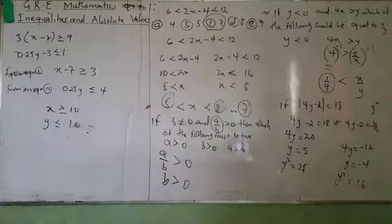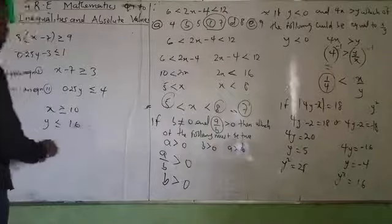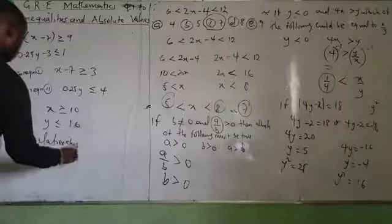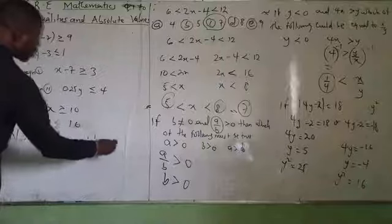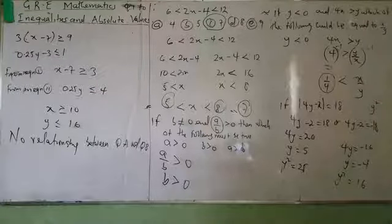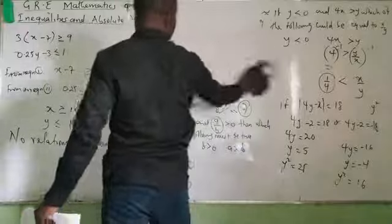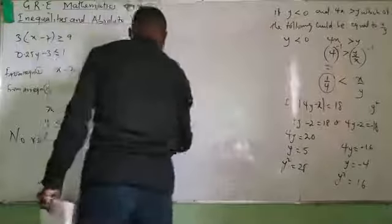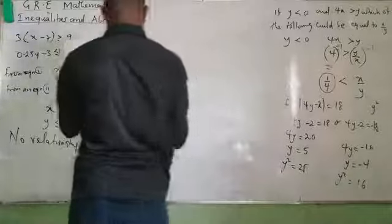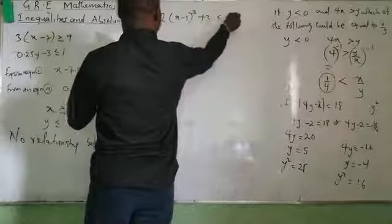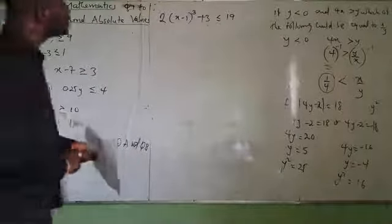What would be the relationship between Quantity A and Quantity B? There is no relationship between them — no definitive relationship between Quantity A and B. There are two more questions to work on. I have 2 times bracket of S minus 1 cubed plus 3, less than or equal to 19.